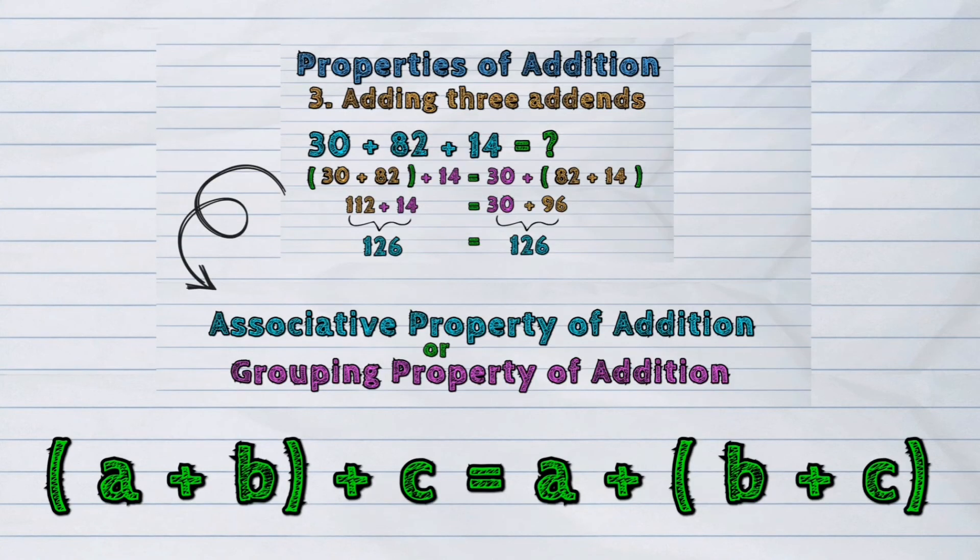The format is open parenthesis a plus b close parenthesis plus c is equal to a plus open parenthesis b plus c close parenthesis. It states that the grouping of the addends does not change the sum.